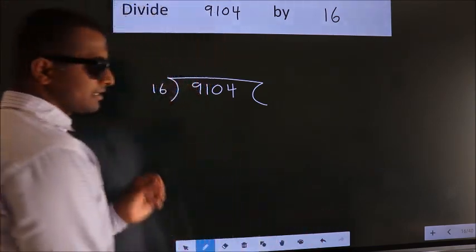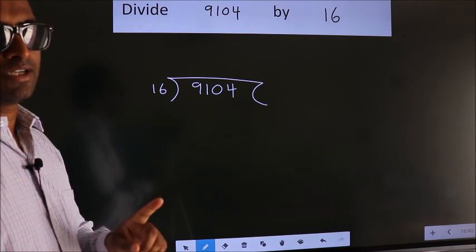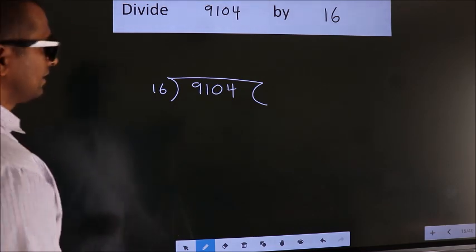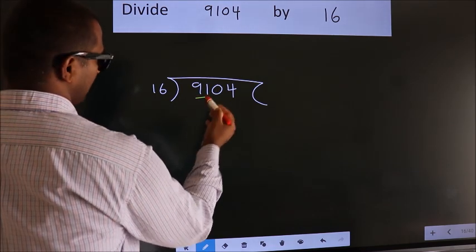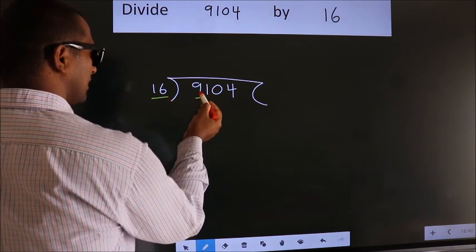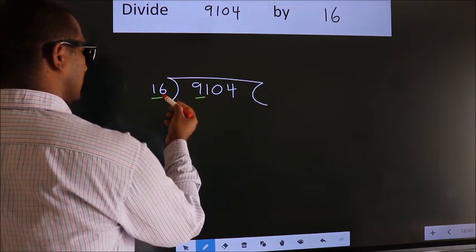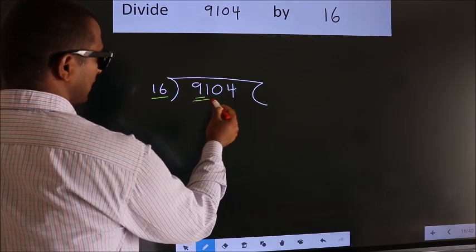This is your step 1. Next, here we have 9, here 16. 9 is smaller than 16. So, we should take two numbers: 91.